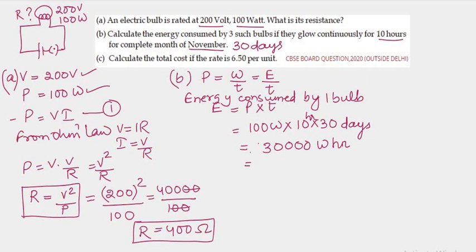So it is 30000 watt hour, which comes out to be 30 kilowatt hour, which is 30 unit, because we know that 1 kilowatt hour is 1 unit. So we have 1 bulb consumes 30 units of energy.